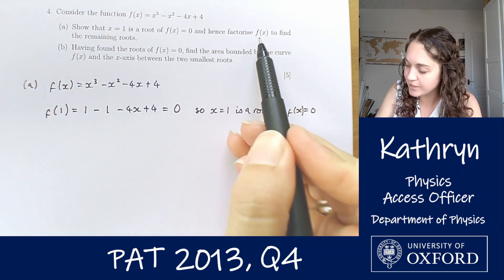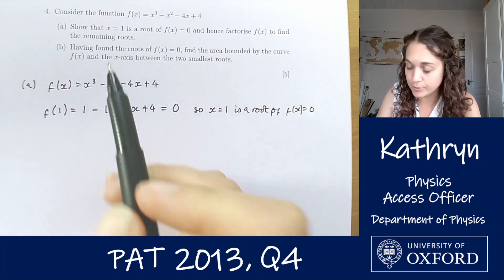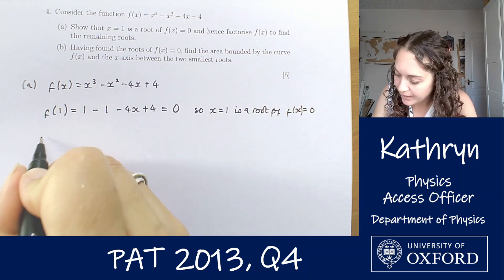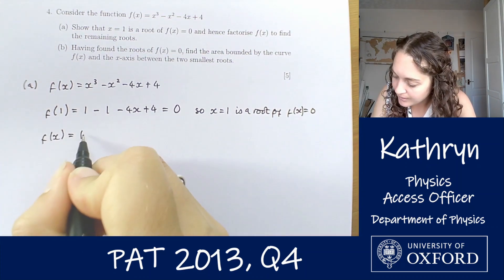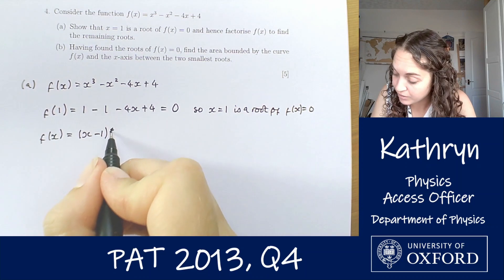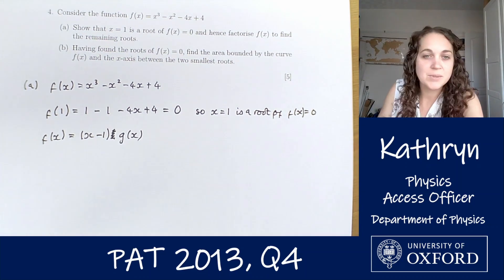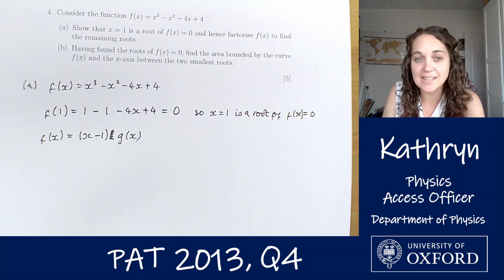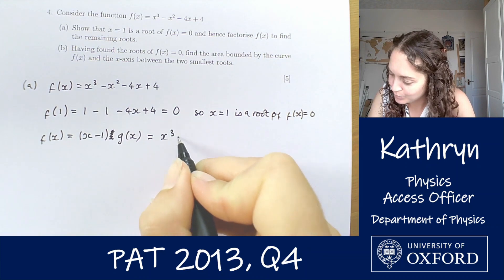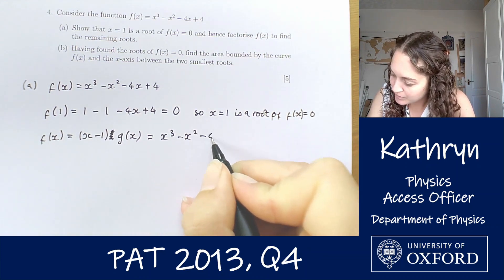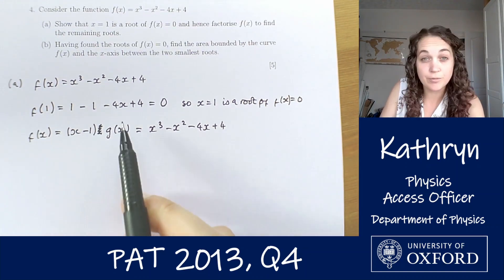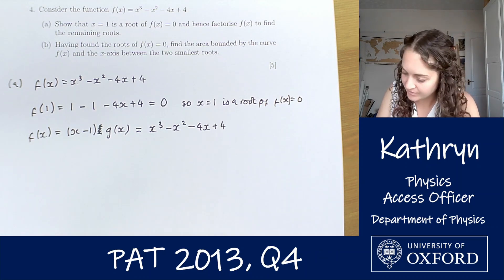The next part says hence factorize f(x) to find the remaining roots. So if we know that x equals 1 is a root, we know that f(x) equals x minus 1 times by some other function of x. For now let's just write that as g(x), some unknown function. But we can work out what g(x) is because f(x) is x cubed minus x squared minus 4x plus 4. So if we divide both sides by x minus 1, then we can find what g(x) is.